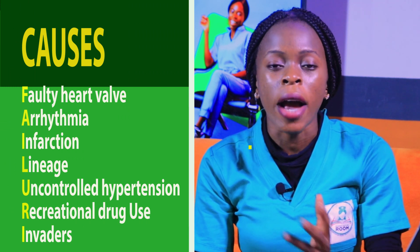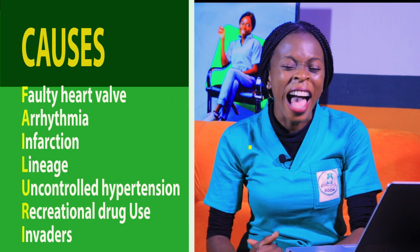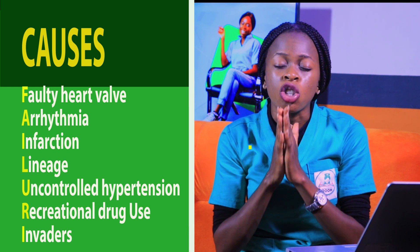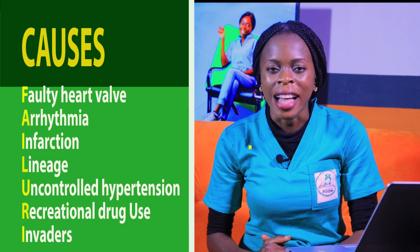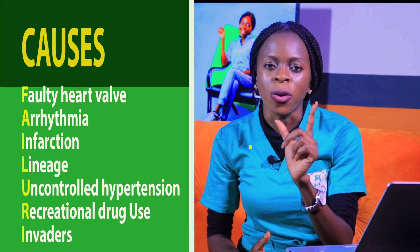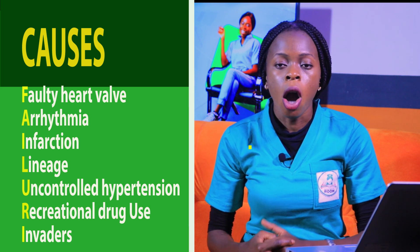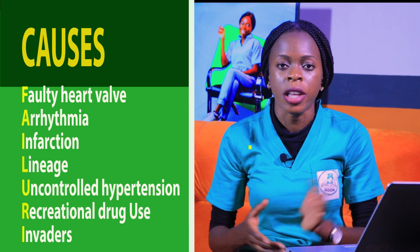R in FAILURE is recreational drug use — the use of cocaine, drug abuse generally, and excessive intake of alcohol. That is why we advise patients with heart diseases to reduce their intake of alcohol. E is invaders — bacteria and viruses. When they enter the heart, they cause destruction and the heart cannot carry out its function. So to remember the causes of heart failure: F — faulty heart valves, A — arrhythmia, I — infarction, L — lineage, U — uncontrolled hypertension, R — recreational drug use, E — invaders such as bacteria or viruses.